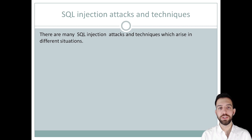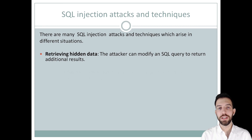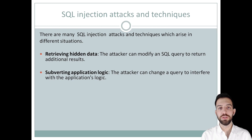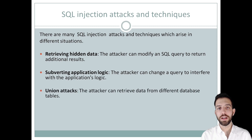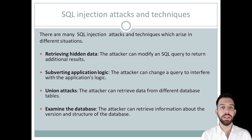There are many SQL Injection attacks and techniques which arise in different situations. The most common SQL Injection examples include: retrieving hidden data where you can change the SQL query to return additional results; subverting application logic where you can change a query to interfere with the application logic; union attacks where you can retrieve data from multiple databases or tables; and examining the database where you can retrieve data about its structure and version.